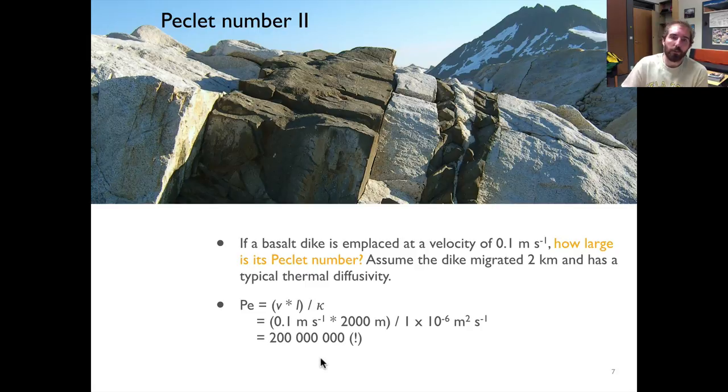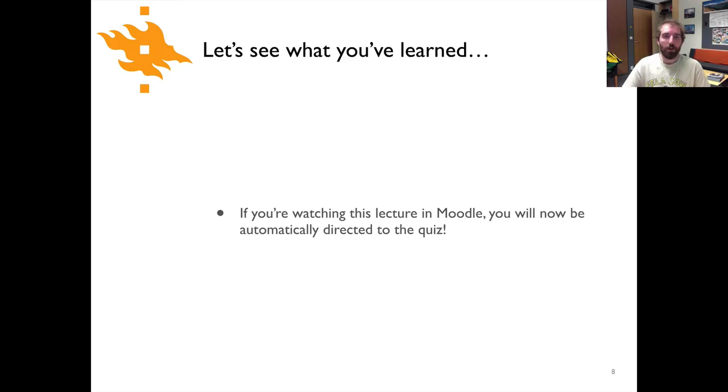Obviously advection is far more important than heat conduction in this case. In other words, we don't have to worry about the heat loss to diffusion during emplacement. All right, so that's it for the Peclet number. Go ahead and take the quiz and come back for the final lecture on the topic of thermal processes in the lithosphere.